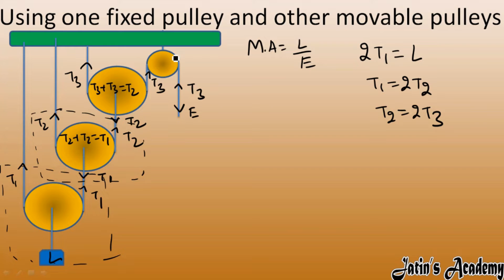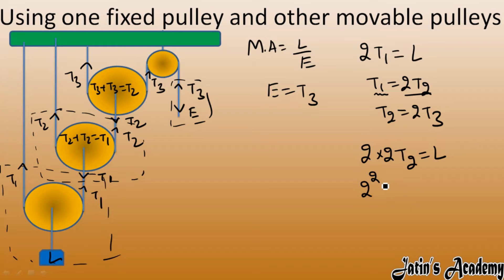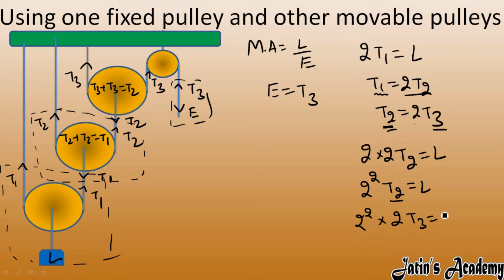For the single fixed pulley, the effort and tension balance each other, so Effort = T3. Now we substitute to find the relation between load and effort in terms of T3. Load = 2 × T1 = 2 × (2 × T2) = 2² × T2. Since T2 = 2 × T3, we get Load = 2² × 2 × T3 = 2³ × T3.